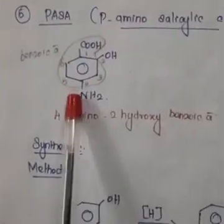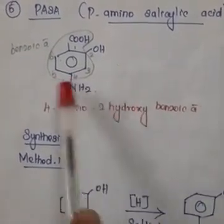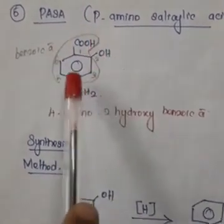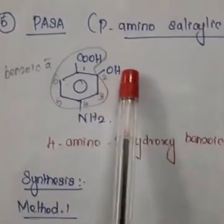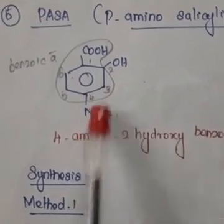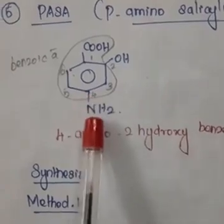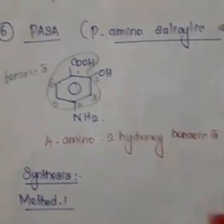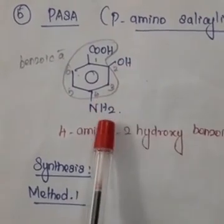In salicylic acid, the para position has an amino group (NH2) substituted — that is para-amino salicylic acid. According to the parent benzoic acid nomenclature, the second position has a hydroxy group and the fourth position has an amino group. By alphabetical order, amino comes first: 4-amino-2-hydroxy benzoic acid. The structure is a benzene ring with COOH, OH at position 2, and NH2 at position 4.